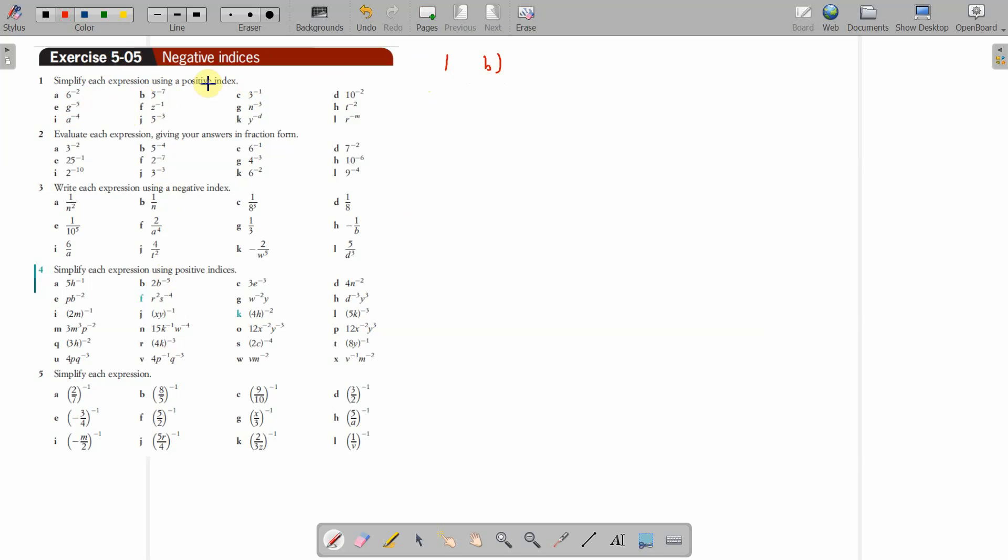Starting with question 1, I'm going to go with part b. Now remember please, positive index. So expressing whatever's there with a positive index. At the moment, 5 to the power of negative 7 is a negative index.